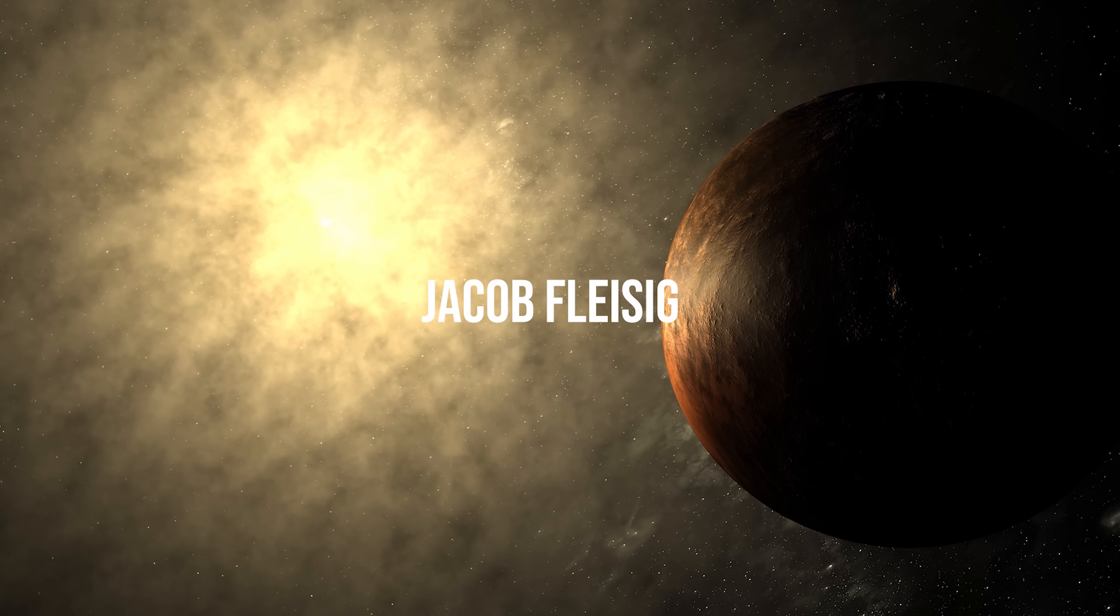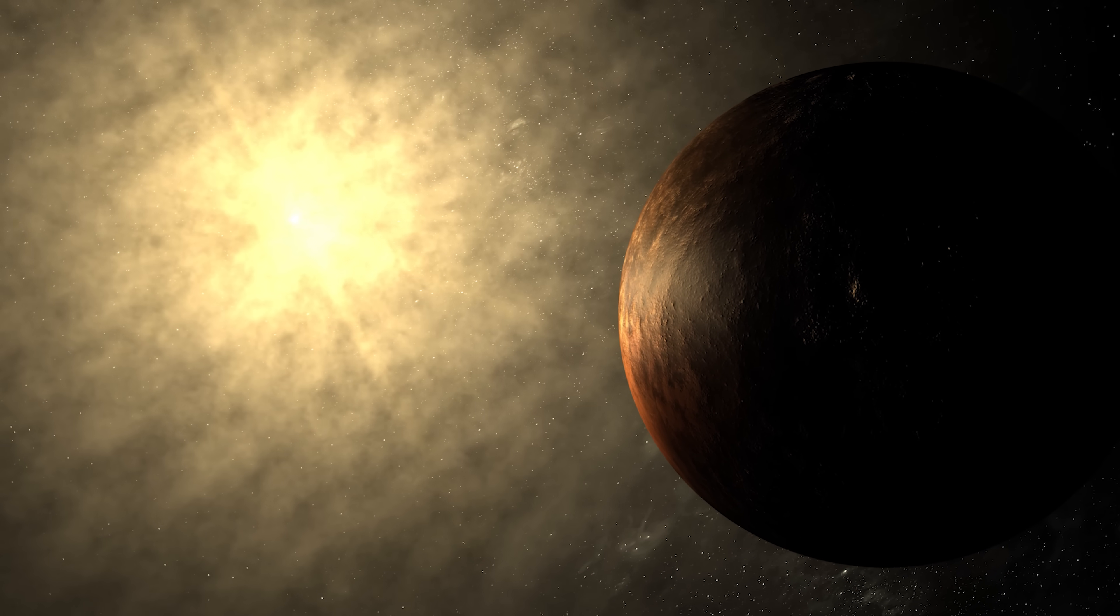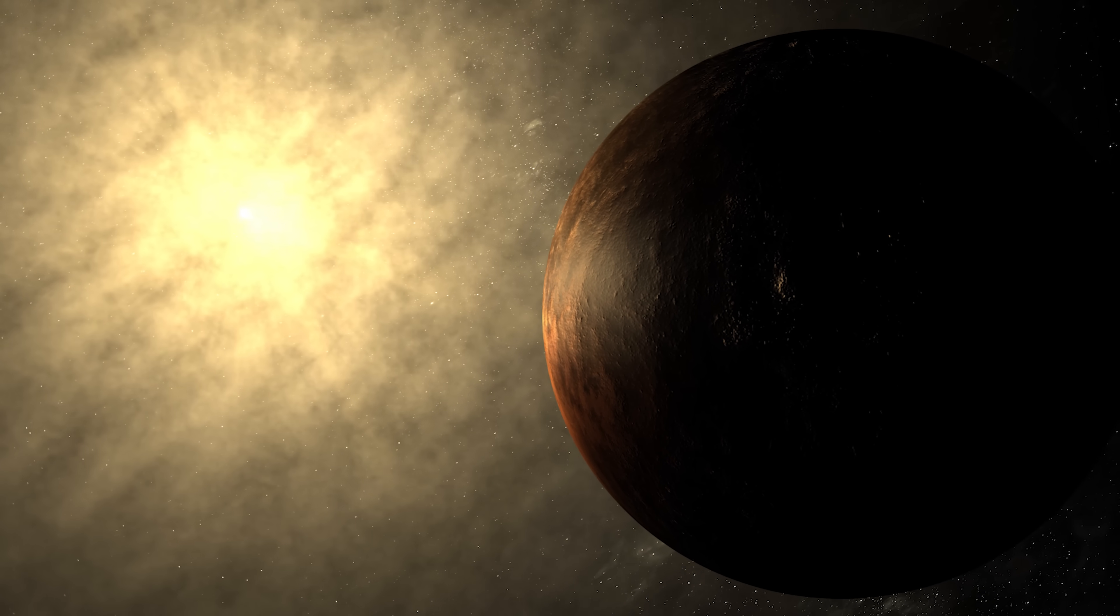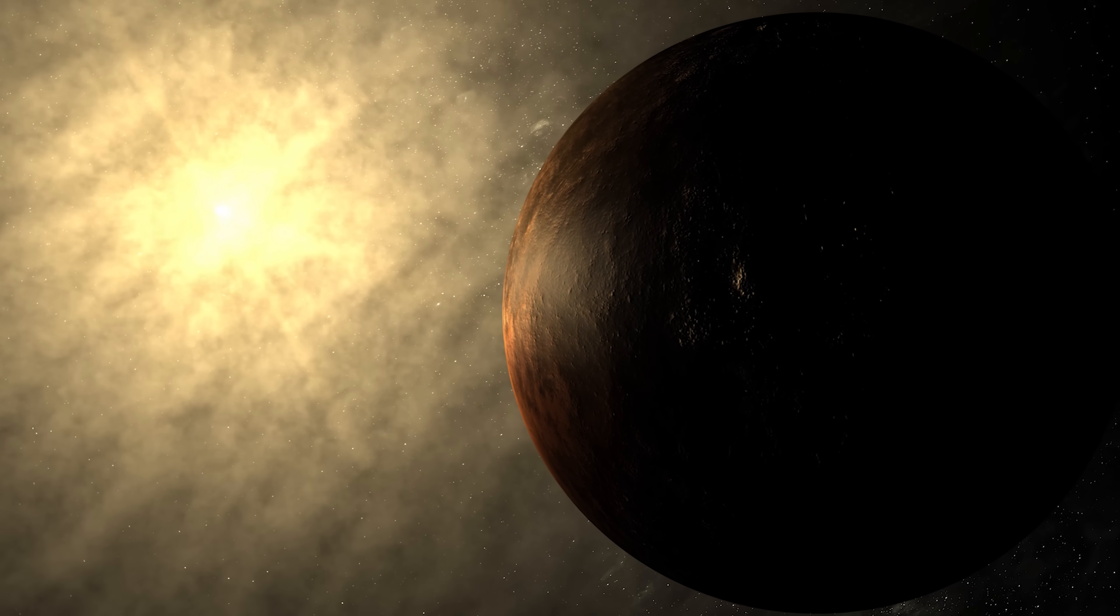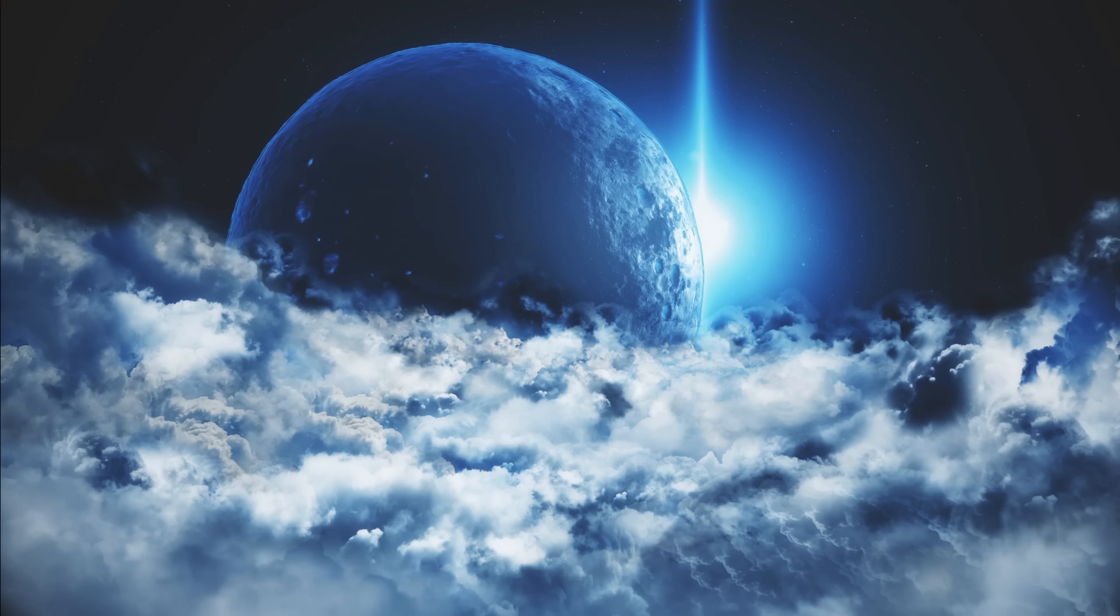Researchers such as Jacob Fleisig and Anne-Marie Madigan have explored how an inclined disk of trans-Neptunian objects could gravitationally influence the orbits of TNOs.